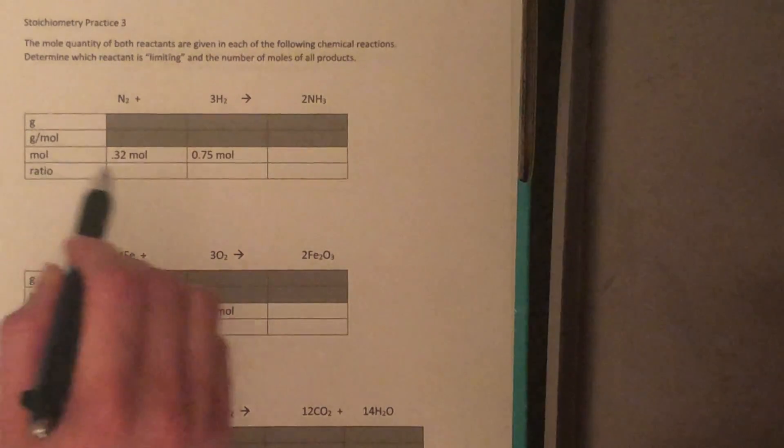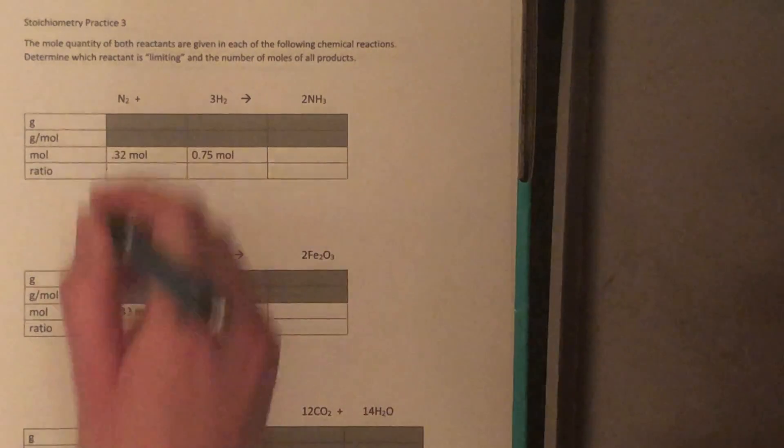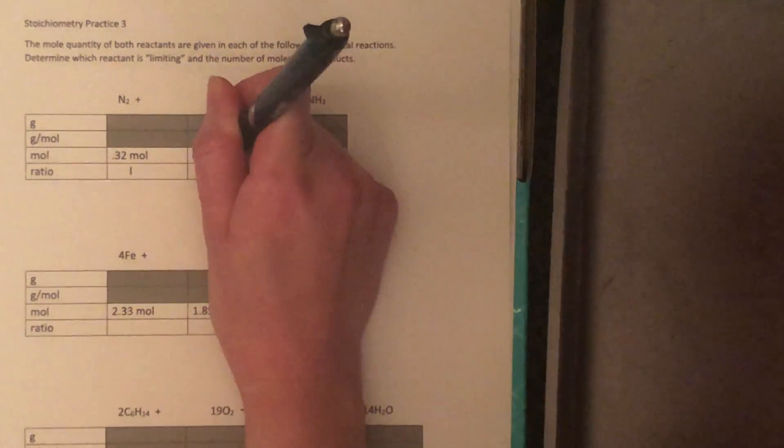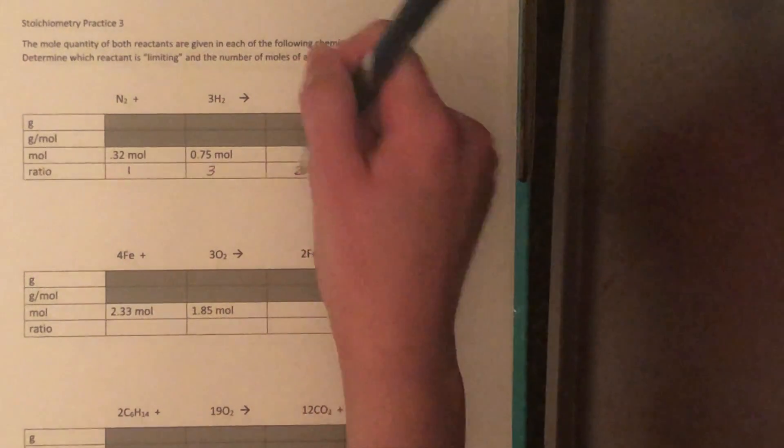First, we'll go ahead and fill in our ratio. We know that this is based on the coefficients of the balanced equation. So we have that implicit one right here. We have a three right here. We have a two for our product.